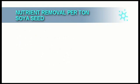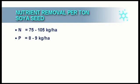One ton of soybean seed removes 75 to 105 kg of nitrogen per hectare, 8 to 9 kg of phosphorus, 25 to 40 kg of potassium, and 9 kg of sulfur per hectare.